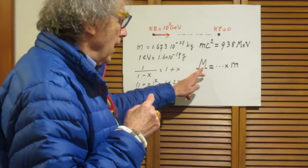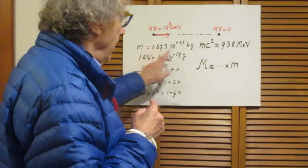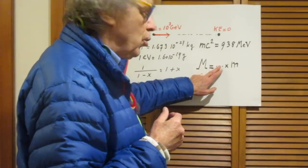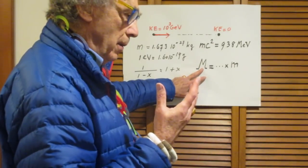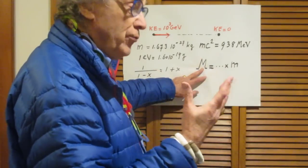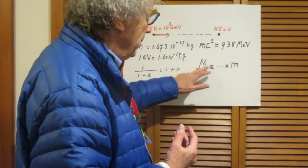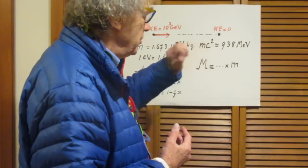I would like you to tell me capital M as so many times little m, where little m is the rest mass of the proton. I want this number with two-digit precision. So if you think that the maximum mass of this newly created particle — which is maximum when the particle itself is also at rest — is 2.7 times little m, you write 2.7. If you think it is 27 times little m, you put 27. I want two-digit precision.